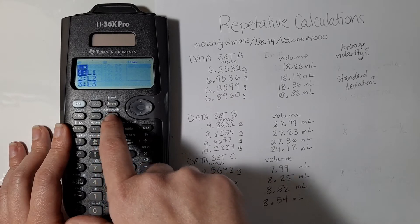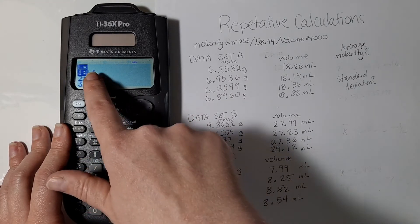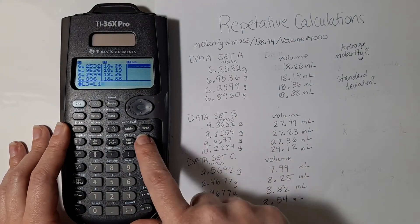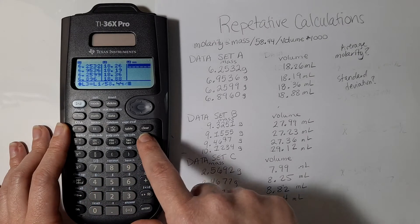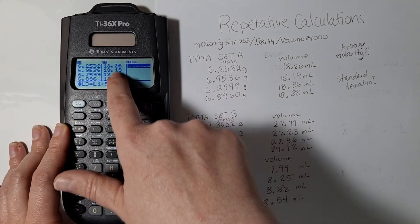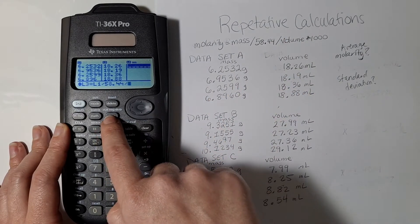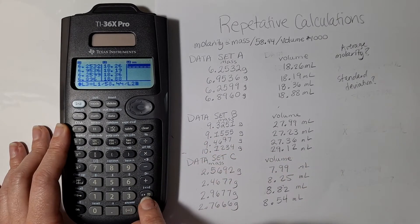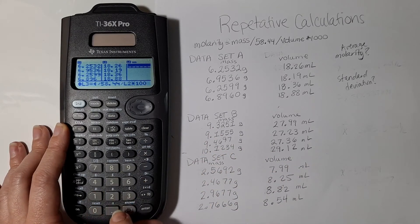So I hit the data button again and you can see that the menu options have changed. I need to reference list 1, then I need to divide by 58.44, then I need to divide by my data in list 2 because that's where my volumes are located. So I hit data again, scroll down to list 2 and select that, then I multiply by 1000.